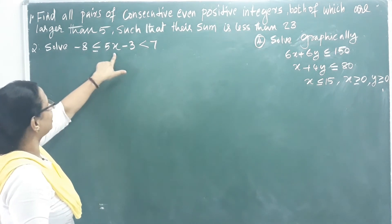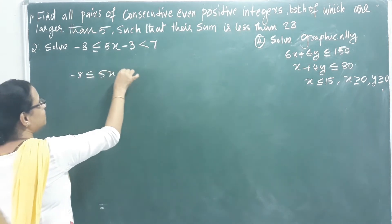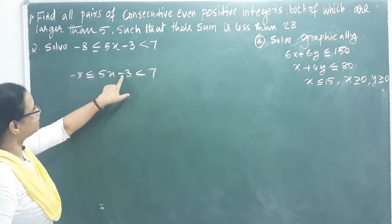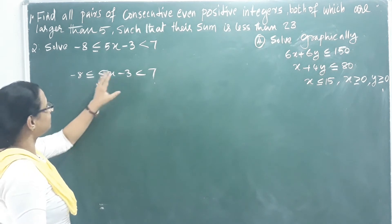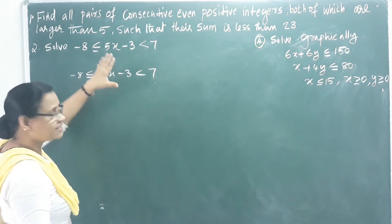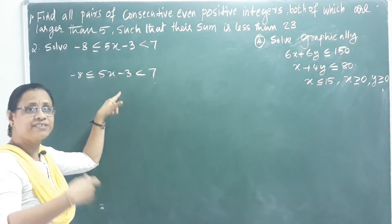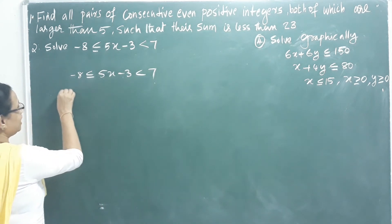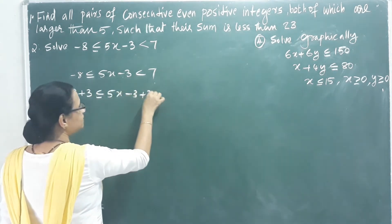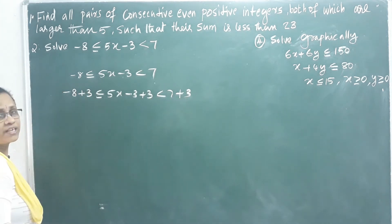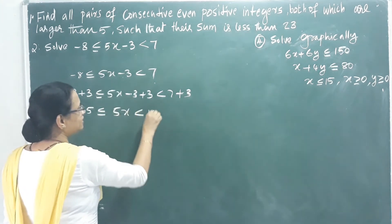Next question: solve negative 8 less than or equal to 5x minus 3 less than 7. We have two inequalities with x in the middle. To isolate x, we cancel the minus 3 by adding plus 3 to all parts. Adding 3 throughout gives: negative 5 less than or equal to 5x less than 10.